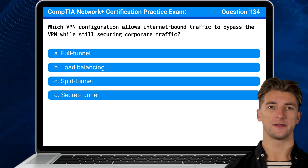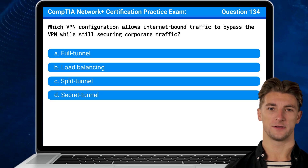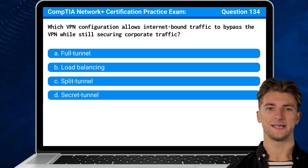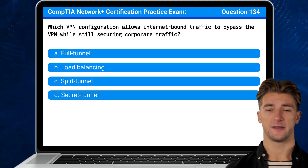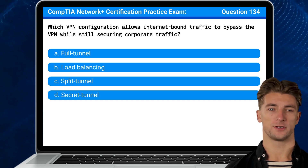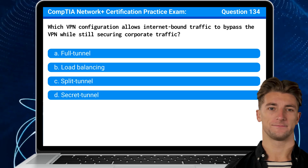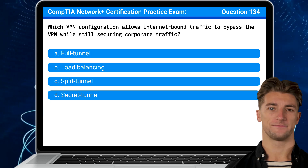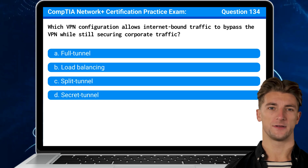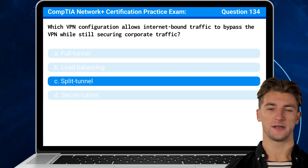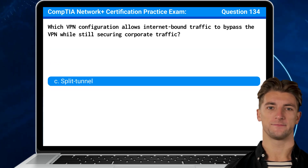Question 134: Which VPN configuration allows internet-bound traffic to bypass the VPN while still securing corporate traffic? The answer is C, split tunnel.